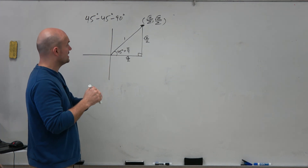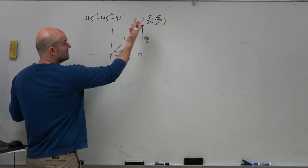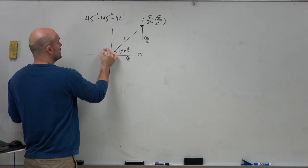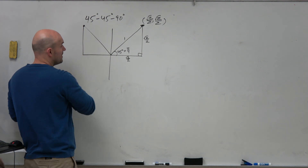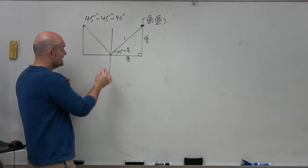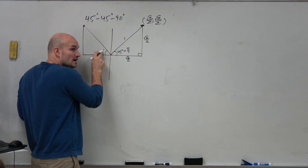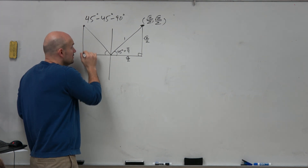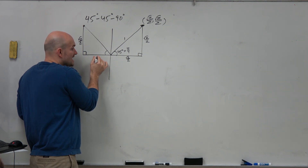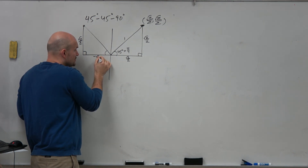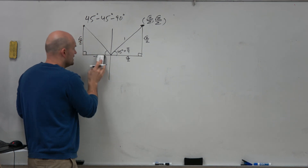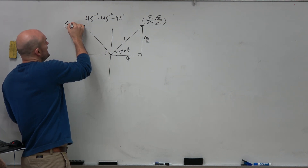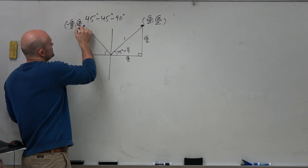Here's the trick we need to work on. If I take this triangle and put it in the second quadrant, everything's the same — the angle is still 45 degrees, we still have a right triangle, this side is still square root of 2 over 2. But this side is now negative square root of 2 over 2. So the coordinate point becomes negative square root of 2 over 2, comma, square root of 2 over 2.